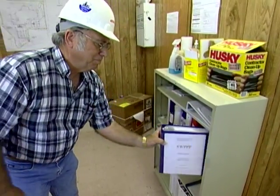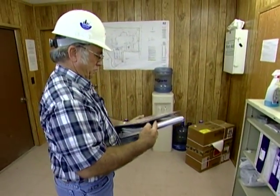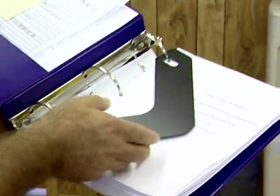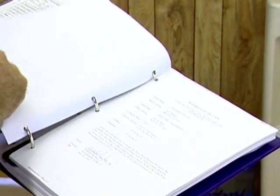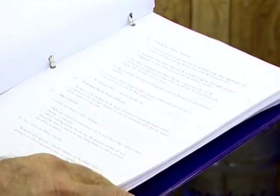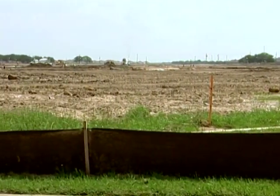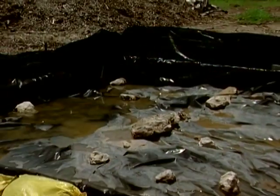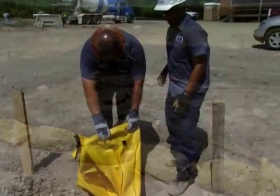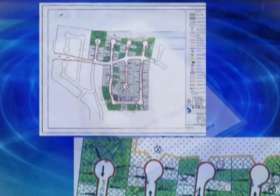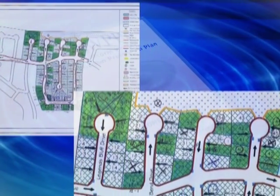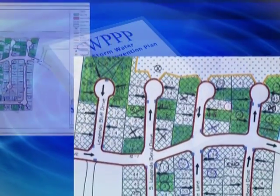Once this paperwork is complete, the physical part of your compliance begins. Your SWIP outlines the BMPs that will be implemented during each phase of construction. Before any soil is disturbed, the BMPs for the first phase of construction must be installed. These may include perimeter controls and stabilized construction entrances. As the project progresses, additional BMPs will be required. Let's look at a typical site to study some common BMPs. Consult your SWIP to see which of these will be used on your project.